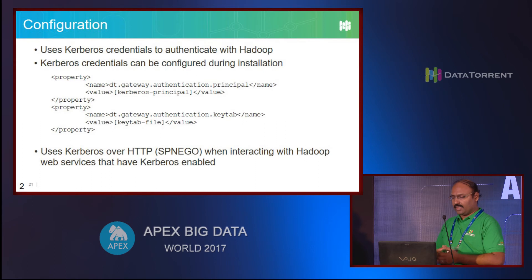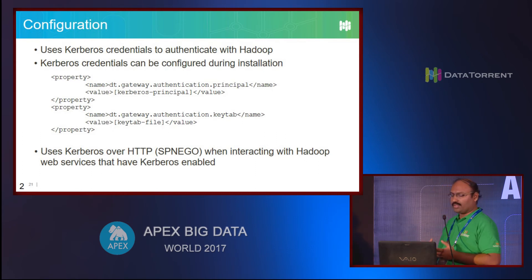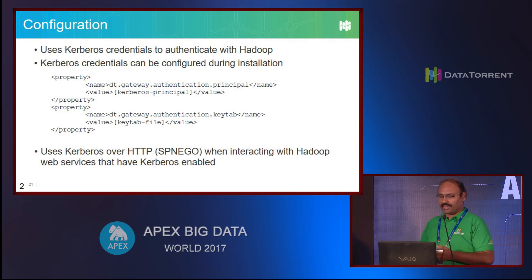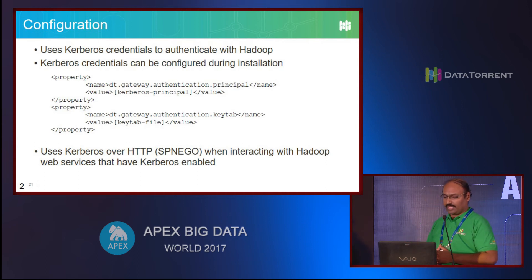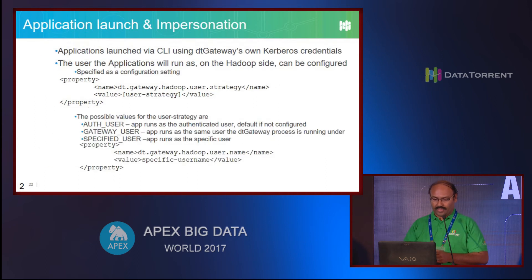Since gateway needs Kerberos to talk to Hadoop, it needs Kerberos credentials. These are the properties you would use - you basically specify a principal and a key tab for gateway and it'll use that to authenticate with Hadoop.